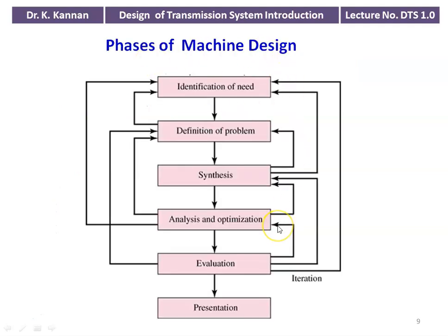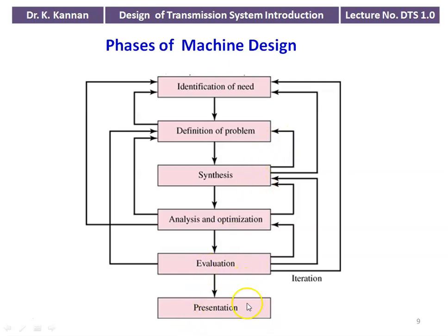This flowchart shows the phases of machine design. We start with Identification of the Need, then define the problem — if there are issues, we revisit the identification of need. Once problem definition is complete, we go to Synthesis, then Analysis and Optimization, then Evaluation, and finally Presentation. The process is interlinked; wherever we need to modify or revisit any phase — definition of the problem or synthesis — we iterate back and eventually arrive at the final presentation of the design.